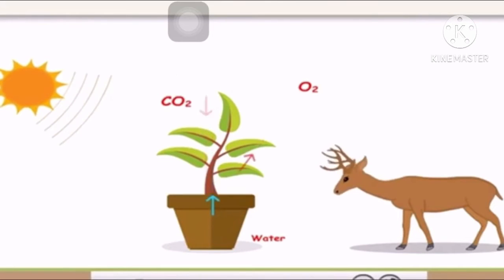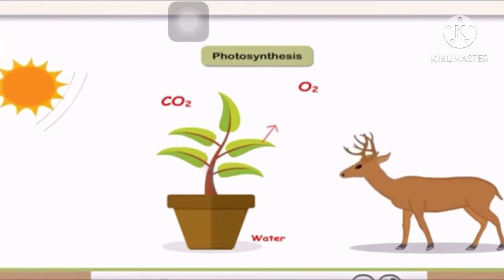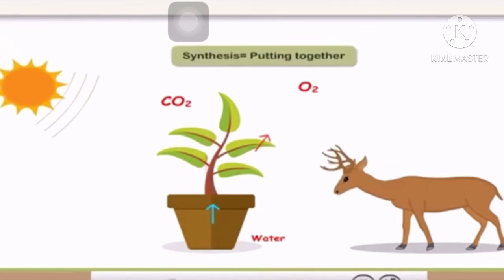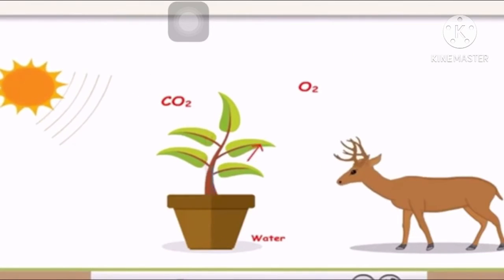Firstly, you have to know that we inhale oxygen and this oxygen we get from the plants. Let's talk about photosynthesis. Photo means light and synthesis means putting together. Photosynthesis is a process by which green plants prepare their own food using carbon dioxide and water in the presence of chlorophyll and sunlight, and they release oxygen and glucose.